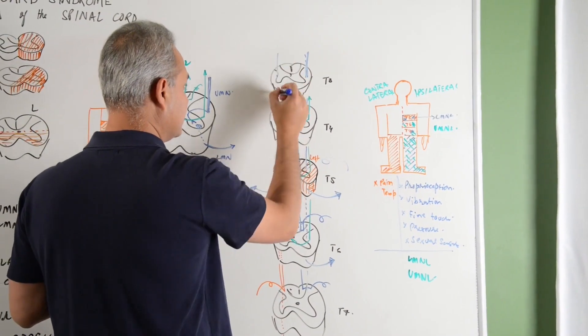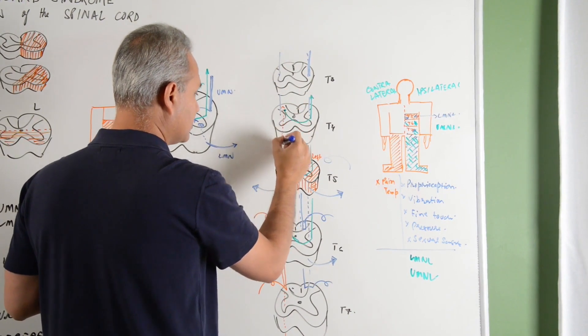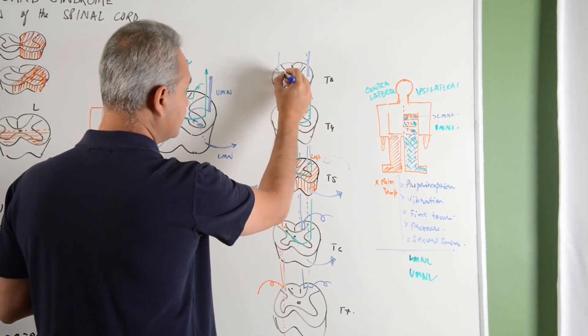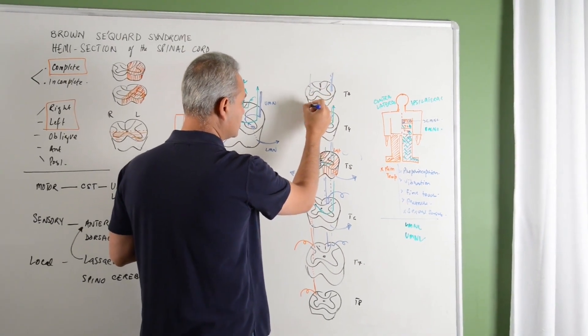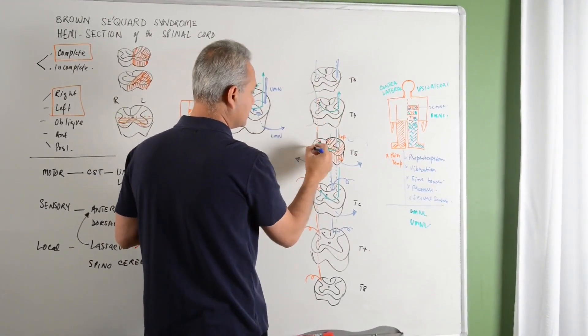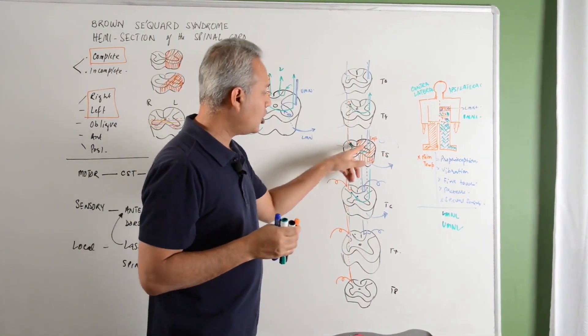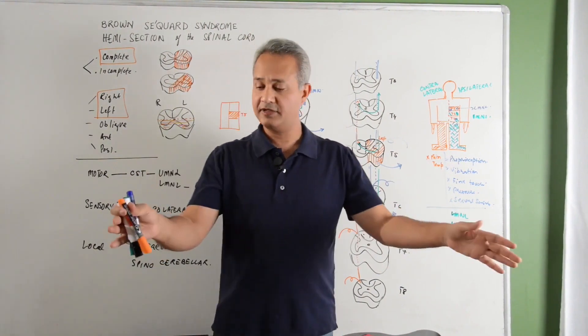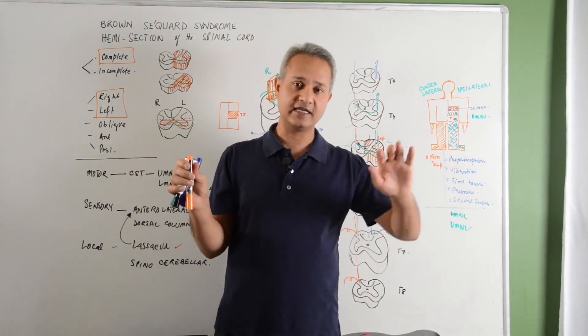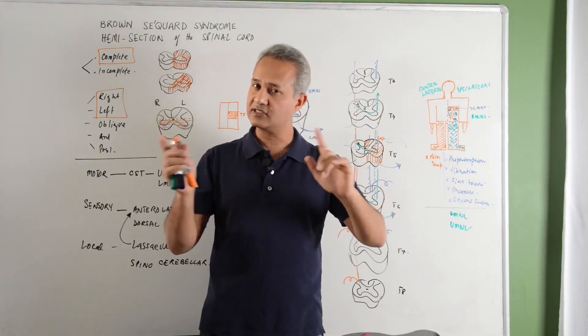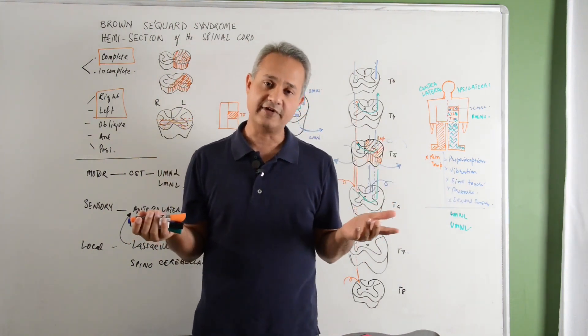Corticospinal tract is coming down, come down, giving fibers at every level to the anterior motor, lower motors. That is fine. At the segment, there might be cross reflexes. For example, if there is pain stimulus on this side, then there is a withdrawal of this and extension of the other side. Such cross reflexes might actually be effective.